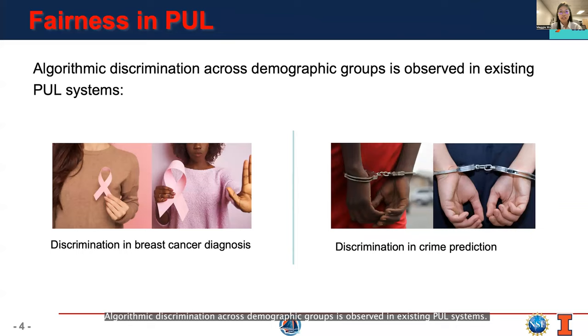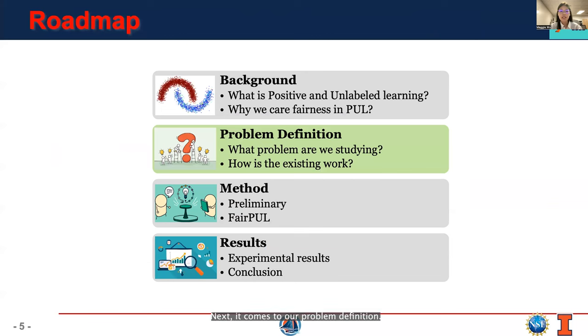Algorithmic discrimination across demographic groups is observed in existing PUL systems. In breast cancer diagnosis, it has been observed that the accuracy of the diagnosed system is much lower for Black women compared with Caucasian. Racial discrimination is also observed in automatic crime prediction systems.